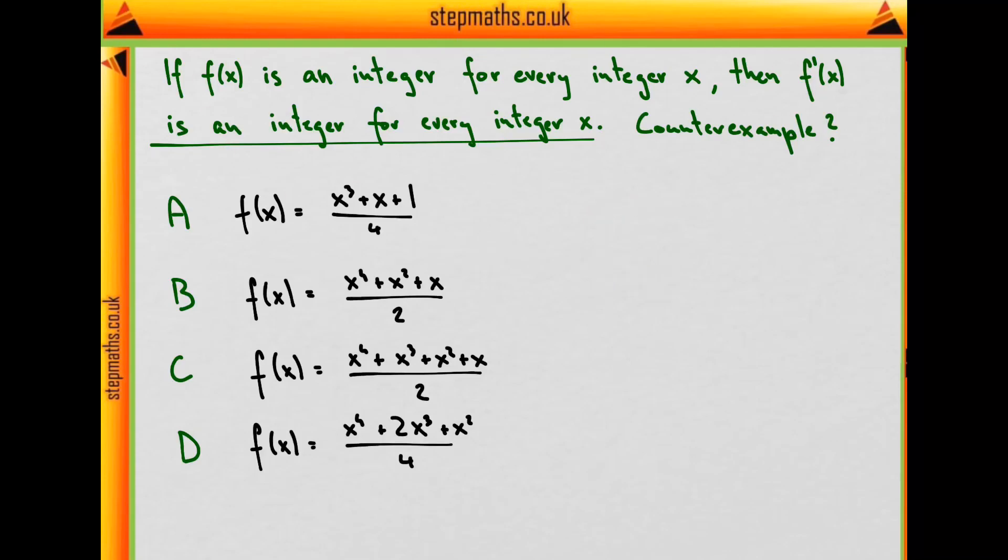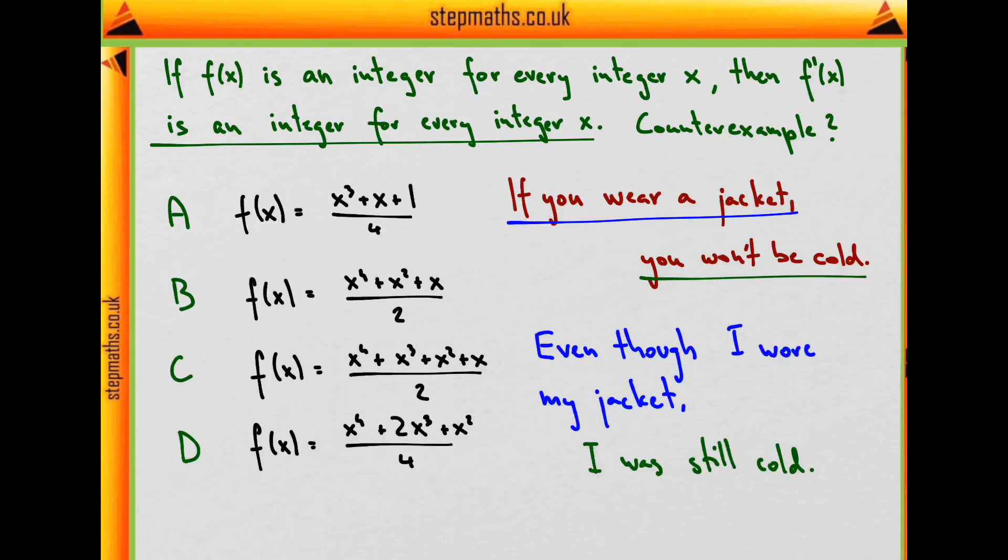Let's first think about what a good counterexample to an if statement will be. Take the statement: if you wear a jacket, you won't be cold. What would be a good counterexample? Even though the first condition was satisfied, what follows still didn't happen. For instance, today, even though I wore my jacket, I was still cold. So the rule that if you wear a jacket you won't be cold is false.